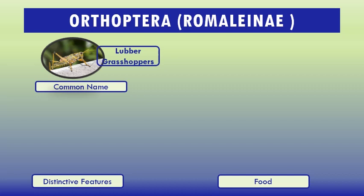Other grasshoppers may have movable spurs which resemble spines, but lubbers also have immovable spines at this location. Lubber grasshoppers also bear a post-sternal spine. They are often large, robust, colorful, and usually bear short wings. When disturbed, lubber grasshoppers may hiss and spread their wings. The males also may use their wings to stridulate. The forewings and hindwings are sometimes brightly colored.